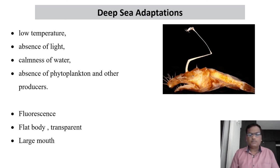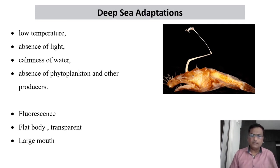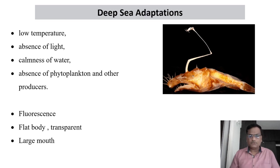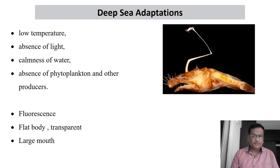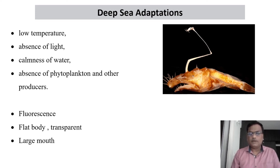There is also absence of phytoplankton and other producers. For any life to exist there must be a food chain with producers. Normally green plants are the producers and they need sunlight — but sunlight is absent here, so there are no producers, and since there are no producers you cannot expect consumers. Yet some special rare deep sea fishes survive by feeding on food debris which falls from the surface areas of the ocean.